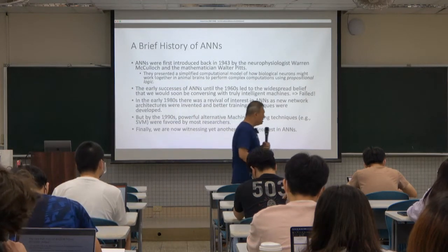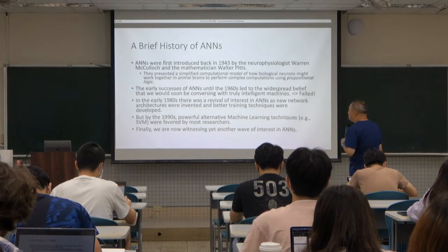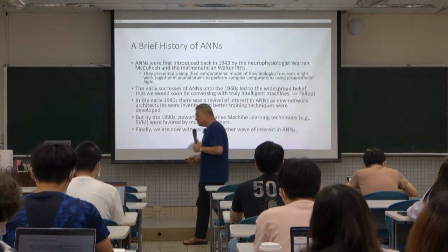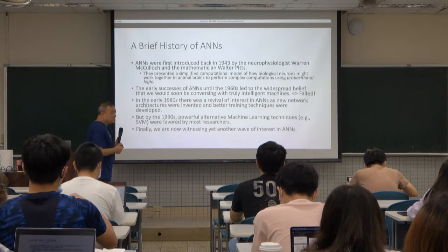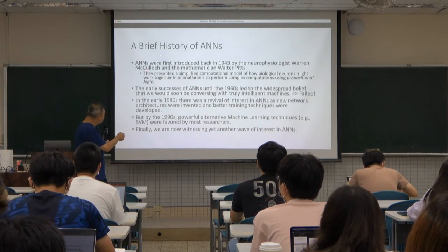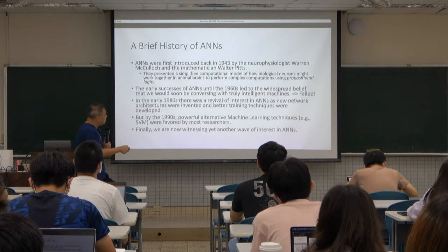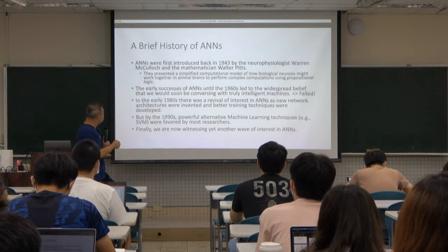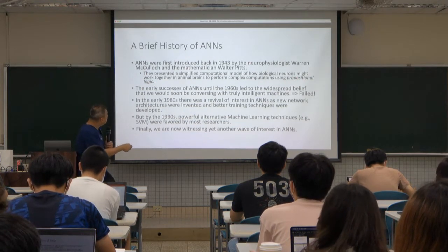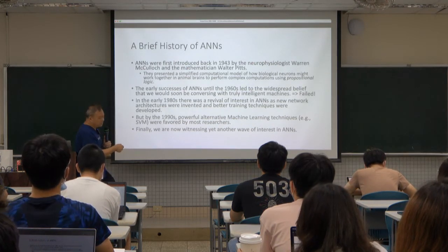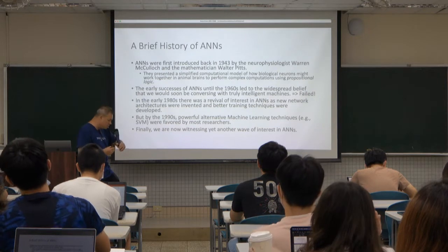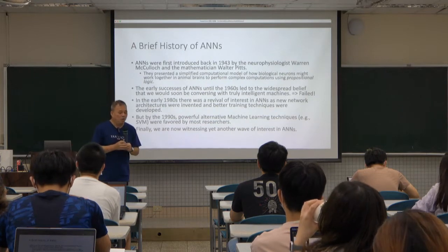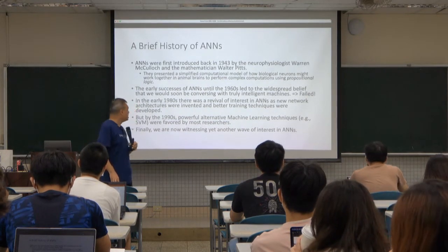This brain researcher collaborated with a mathematician to propose this neural architecture. Their architecture is obviously very different from the current one, but at that time they were able to use it to solve propositional logic. I will talk about their simplified architecture hopefully today, just to give you an idea of what an ANN in the old days looked like.